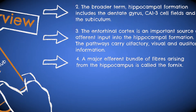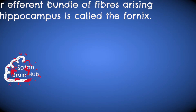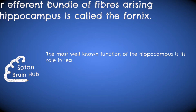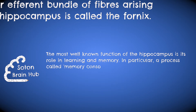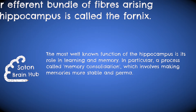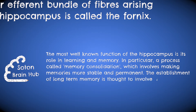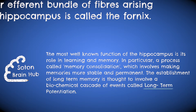But what does the hippocampus actually do? Primarily it's involved in learning and memory, in particular in memory consolidation. This is when your memories are made more permanent and structured after initial acquisition. The process of turning immediate short-term memories into long-term memories involves a complex biochemical event cascade called long-term potentiation.